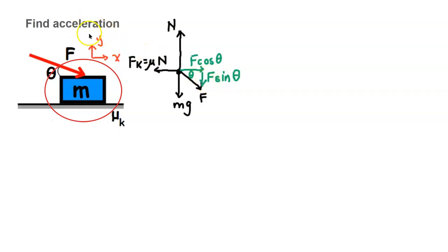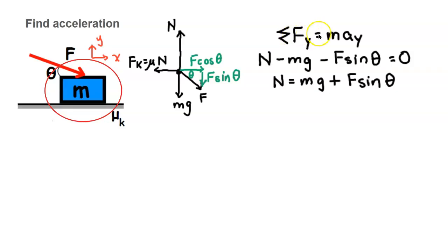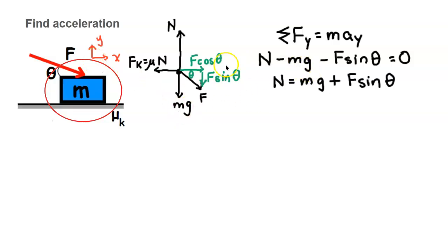We're looking for the acceleration in terms of the given variables. We're going to apply Newton's second law for the vertical axis: net force y equals m·a_y. We know vertically it's not accelerating, so the right-hand side is zero. On the left-hand side, we start with the normal force in the positive direction minus the forces in the negative direction: mg and F sine theta. Solving for n, we get n equals mg plus F sine theta.